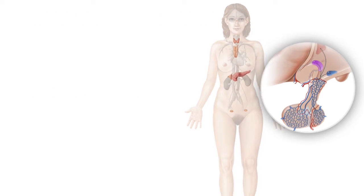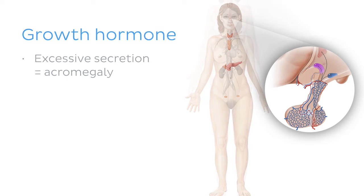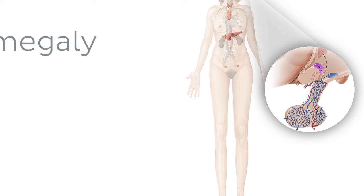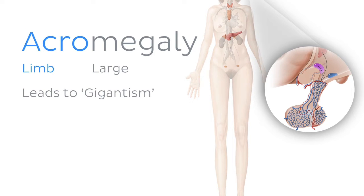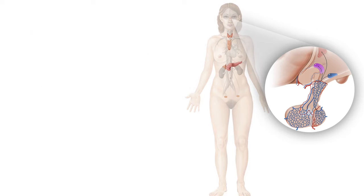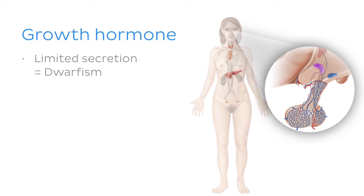One hormone of interest is growth hormone, and excessive secretion of it can cause acromegaly, which is enlargement of the limbs. Overproduction of the hormone in children can cause increased growth of long bones and lead to gigantism, which refers to abnormal height. On the other end of the scale, we of course have dwarfism.